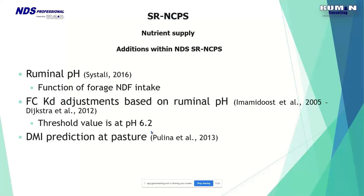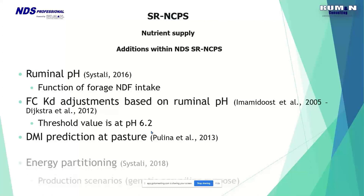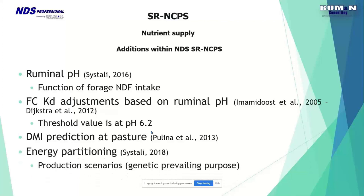There is also a tool to predict dry matter intake at pasture. Pasture is much more common for small ruminants than for larger ruminants, for both sheep and goats. The system also allows the user to partition energy according to how they want, based on the genetic prevailing purpose of the animals.